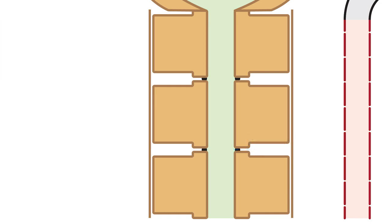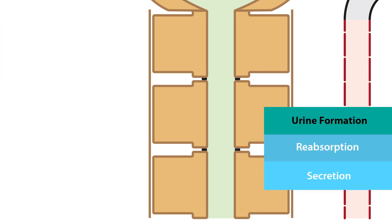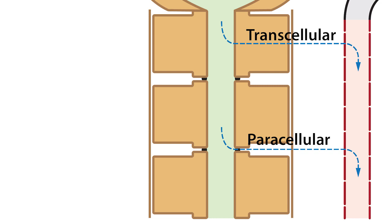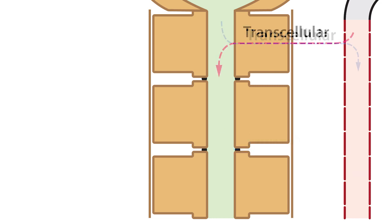As we mentioned earlier, secretion involves the movement of primarily solutes from the peritubular capillaries back into the ultrafiltrate of the tubule. Unlike reabsorption which occurs via transcellular and paracellular pathways, secretion occurs via transcellular pathways only. Furthermore, the majority of secretion involves the transport of negatively charged anions from the peritubular capillaries into the proximal tubule.